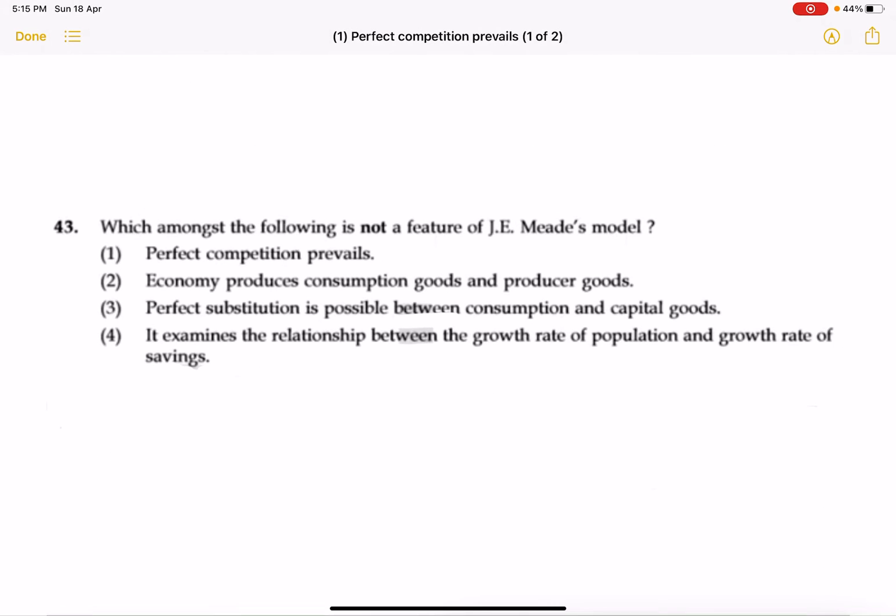A question was asked previously: which among the following is not a feature of JE Meade model? Perfect competition is a feature. Economy produces consumption or producer goods is true. Perfect substitutability between consumption and capital goods is true. Fourth, it examines the relation between growth rate of population and growth rate of savings - this is the wrong statement. So fourth is the correct option.